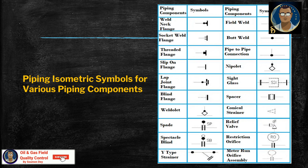For piping and isometric symbols for various piping components other than valves and fittings, there are a few more things to represent in the drawing — like weld neck flange, socket weld flange, threaded flange, slip-on flange, lap joint flange, blind flange, weld outlet, spade, spectacle blind, Y-type strainers. To show field weld, you can see 'FW' written. Also shown: butt weld pipe-to-pipe connection, nipolet, side glass, spacer, conical strainer, relief valve, restriction orifice, meter run, and orifice assembly.